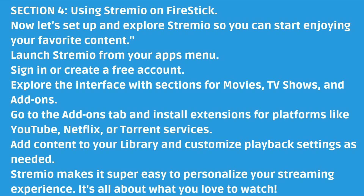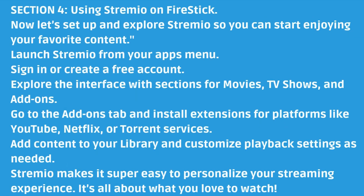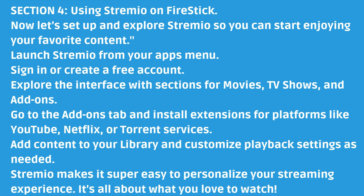Section 4: Using Stremio on Fire Stick. Now let's set up and explore Stremio so you can start enjoying your favorite content. Launch Stremio from your apps menu and sign in or create a free account. Explore the interface with sections for movies, TV shows, and add-ons. Go to the Add-Ons tab and install extensions for platforms like YouTube, Netflix, or Torrent services. Add content to your library and customize playback settings as needed. Stremio makes it super easy to personalize your streaming experience — it's all about what you love to watch.